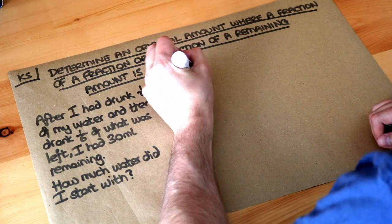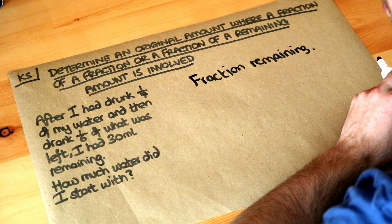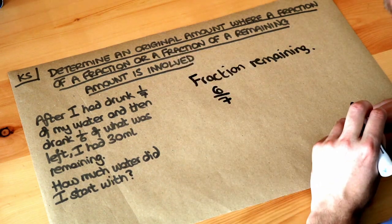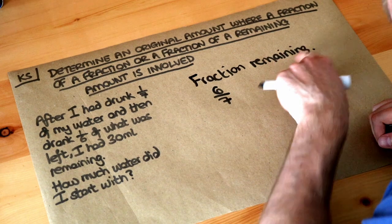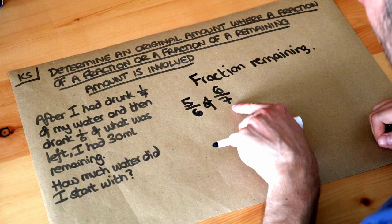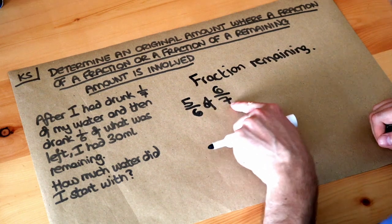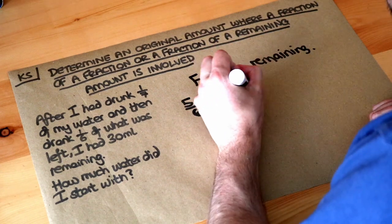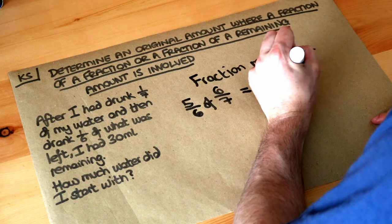If we drank a seventh of the drink, what fraction do we have remaining? We would have six-sevenths left. Then if we drank a sixth of that remaining amount, what fraction are we leaving remaining? We're leaving five-sixths of the six-sevenths. So we're focusing on what we have remaining each time. Remember, when we have the word 'of' we can multiply these together.